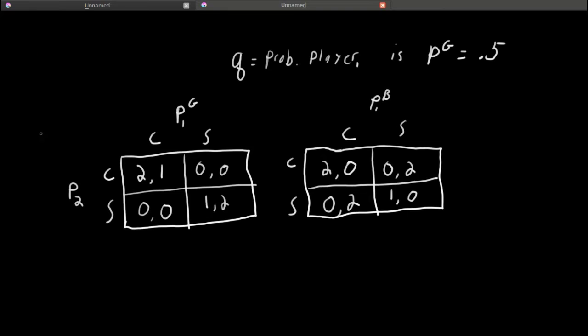So, let's list his actions. I'm going to say A11, player 1's first action is C if P1G, C if P1B.